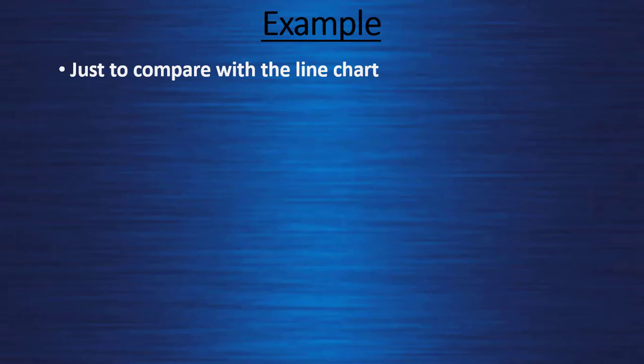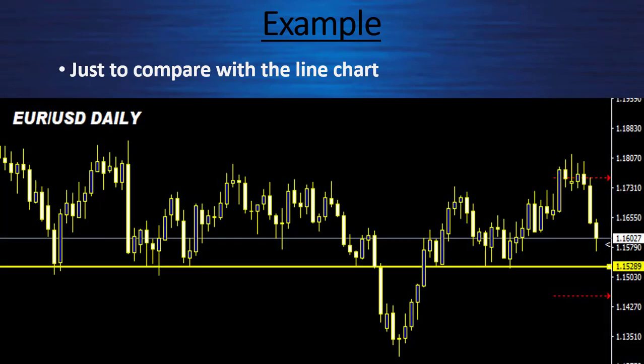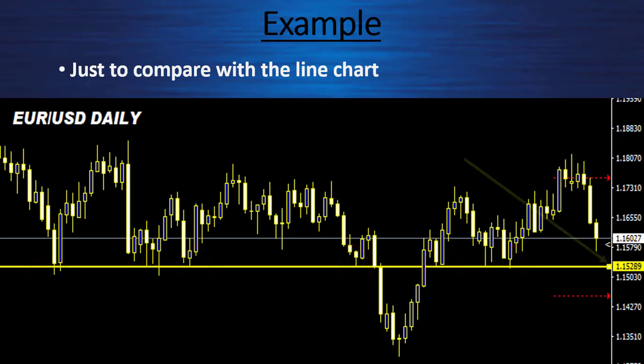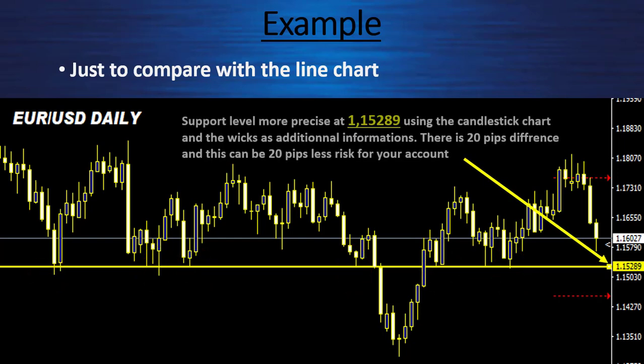Let's compare with the line chart. Here is our EURUSD daily candlestick chart — the same chart as before. We can see clearly the bounces, and our line using the wicks — the extreme point the price has reached for a specific amount of time — gives us a level at 1.15289. So this level is more precise using the candlestick chart, and the wicks as additional information provide 20 pips more precision, which can be a nice advantage to lower your stop loss size.